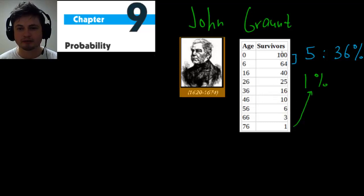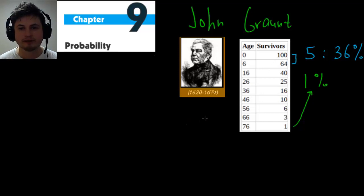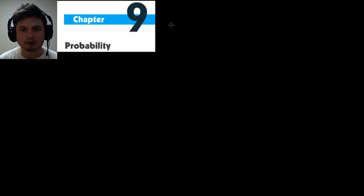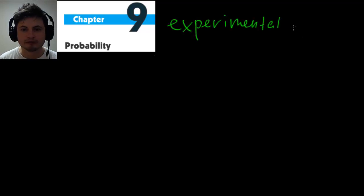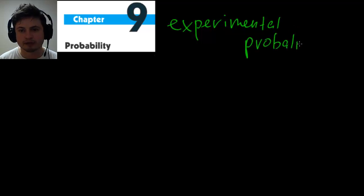This is one of the more elegant early uses of probability — finding the chance of someone living to a certain age. What we're going to look at specifically is called experimental probability: doing little experiments and trying to find the chance or odds of something happening.